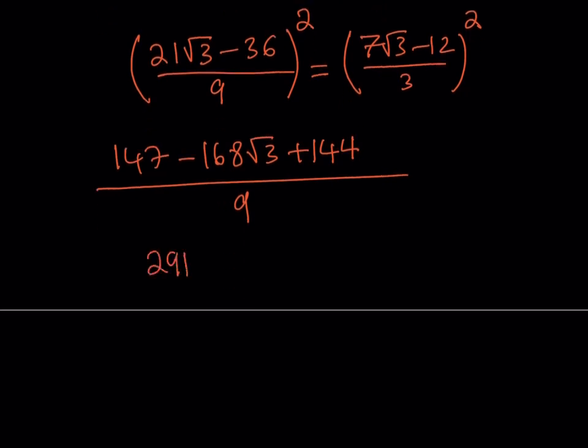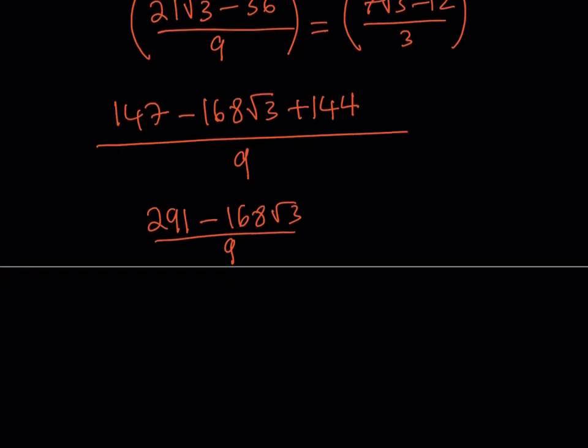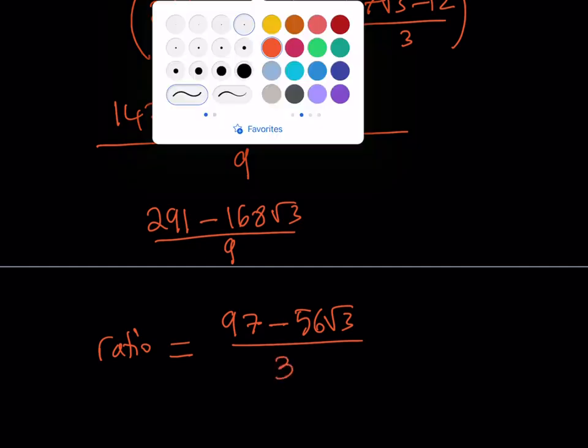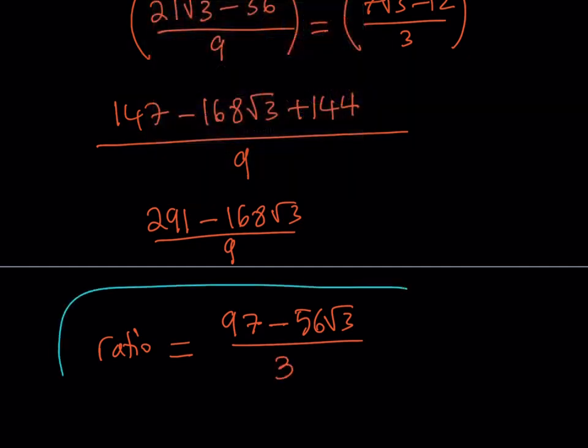And luckily, all of these numbers are divisible by 3. So we can go ahead and divide everything by 3 and write our ratio in the simplest form. Divide everything by 3, so this should be 97, 168 would be 56 root 3 divided by 3. So basically, this is the ratio I've been looking for.